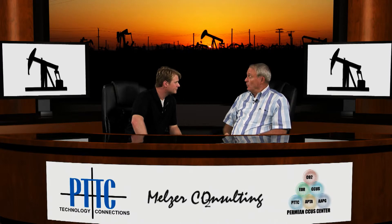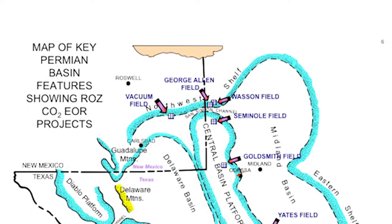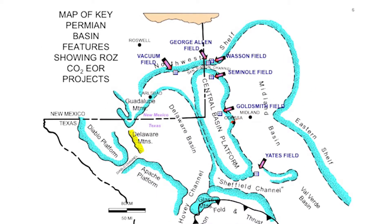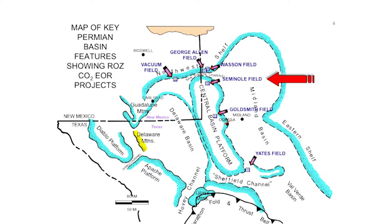Right now we've got 12 ongoing projects — four of which are at Seminole Field, several more at the Wasson Field, Vacuum Field, Goldsmith Field, and the George Allen Field. They're all actively looking and trying to recover oil from the residual oil zone. These are all brown fields, so they had existing production before the ROZ penetrations. They're all from the St. Andrews Formation. We have a map here showing the location of those projects, with the red arrow pointing to the Seminole Project.